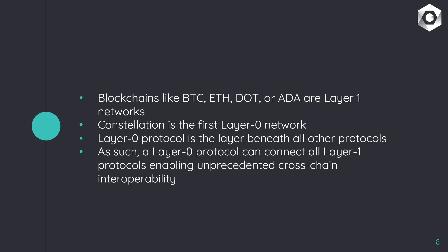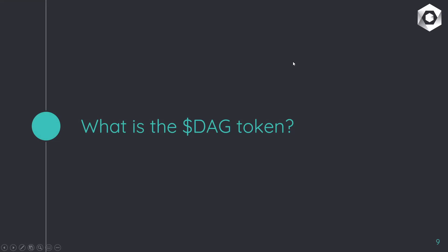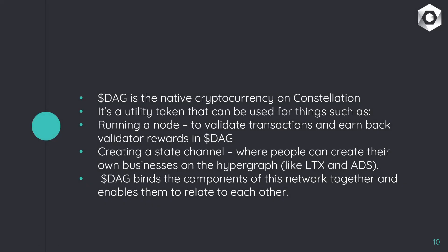What is the DAG token? DAG is the native cryptocurrency on Constellation — a utility token used for a couple of key things. First, you need DAG in order to create a state channel, where people can build their own businesses on the Hypergraph. Two fantastic examples are Lattice Exchange and Alchemy, both created and launched on the Hypergraph. You also need 250,000 DAG tokens to run a node, which validates transactions and earns back validator rewards in DAG. DAG binds the components of the network together — it's like the lifeblood of the Hypergraph, just like the USD is for the US economy.